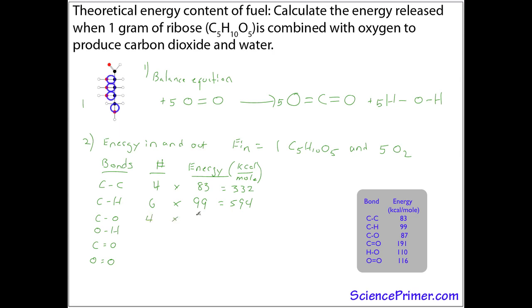Four carbon-oxygen single bonds. Four times 87 gives us 348. We have four oxygen-hydrogen single bonds. Each of those have 110 kilocals per mole of energy associated with them. So that gives us another 440. One carbon-oxygen single bond. Five oxygen-oxygen double bonds. We multiply those. We then take these values and sum them.